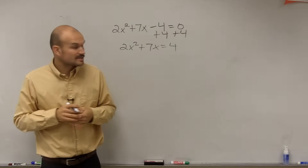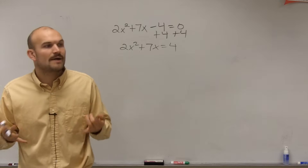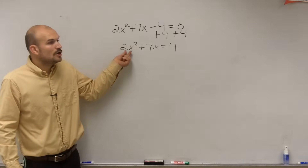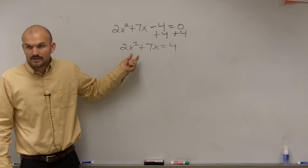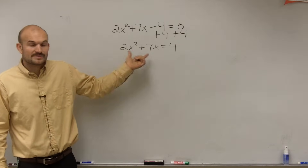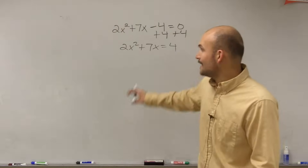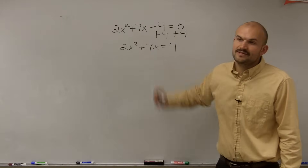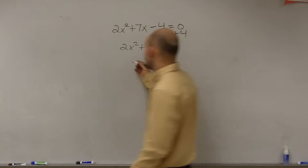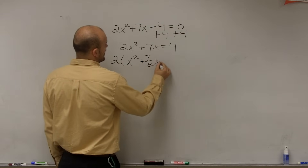Now, when completing the square, we have to create a perfect square trinomial — that's why we complete the square. However, we cannot create a perfect square trinomial when the coefficient of our quadratic term is not 1. So what I'm going to have to do is factor out a 2. It gets a problem here because 2 does not evenly factor into 7, so this is going to create a fraction. We just need to get used to using fractions. So I factor out a 2 and I get x squared plus 7-halves x equals 4.